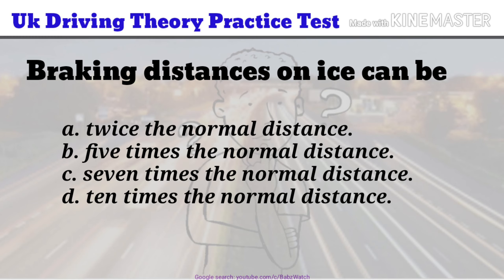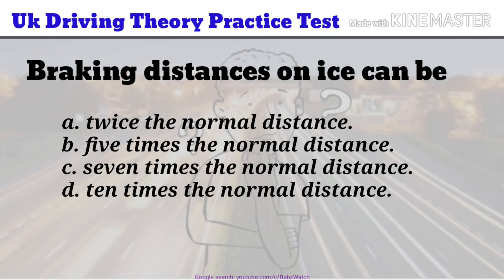UK Driving Theory Practice Test Question 18 of 50. Braking distances on ice can be: a. Twice the normal distance. b. Five times the normal distance. c. Seven times the normal distance. d. Ten times the normal distance. The correct answer is d.